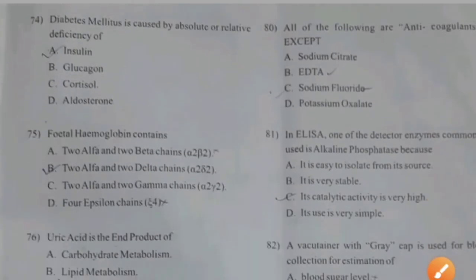Diabetes mellitus is caused by the absolute or relative deficiency of — insulin, glucagon, cortisol, or aldosterone. Right answer A: Insulin.